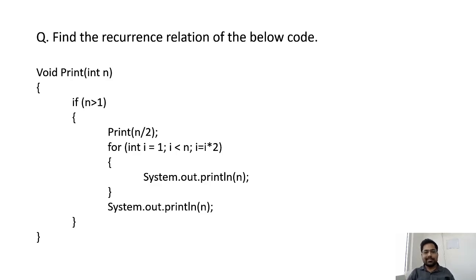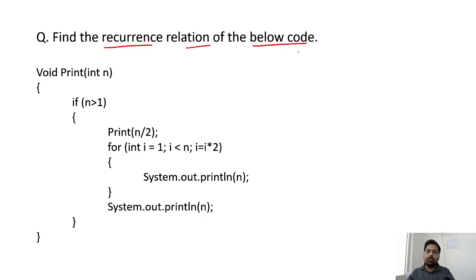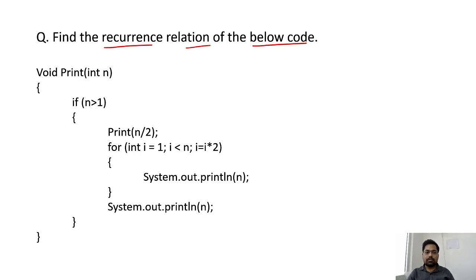Hello students, welcome to Edison. In this video we are going to discuss why we are taking non-negative cost, or you can say positive cost. To answer that question we have to find a recurrence relation for the below code. For those who are new to this question-answer session or problem solving videos, please check the detailed videos first, where I have explained how to get time complexity, space complexity, and how to get the recurrence relation.